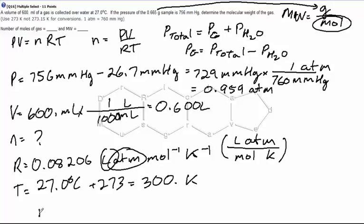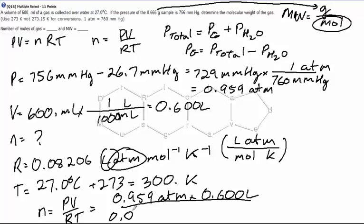N equals PV over RT. Pressure, 0.959 atmospheres. Volume, 0.600 liters. R, 0.08206 liters atmospheres per mole per Kelvin. Temperature, 300 K. You can see that the Kelvins will cancel, the liters will cancel, the atmospheres will cancel. That'll leave us with moles. That's three significant figures. We need to get the molecular weight. That'll be grams divided by the number of moles here. That'll end up being three significant figures as well.